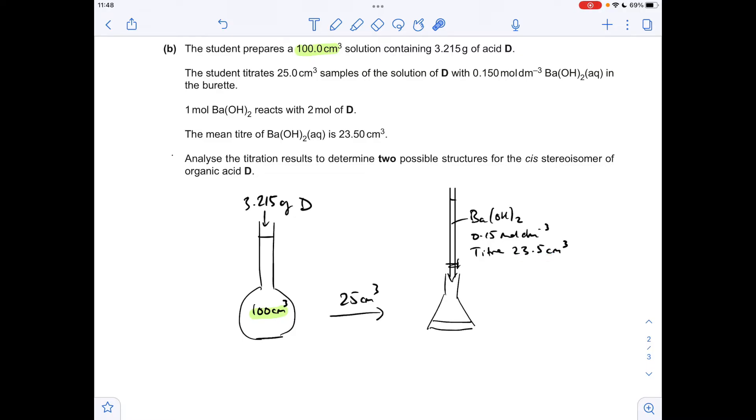We're also told the mole ratio in the reaction. One mole of barium hydroxide reacts with two moles of D. So the first thing we need to do is work out how many moles of barium hydroxide have been involved. So that's just concentration times that volume. But the volume's got to be in decimeters cubed. So that's coming out at 3.525 × 10⁻³. The moles of D that must be in this 25 cm³ used in the titration is going to be double that because of the ratio, which comes out at 7.05 × 10⁻³.